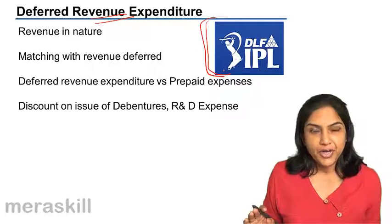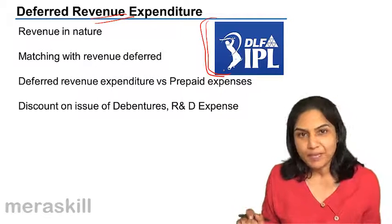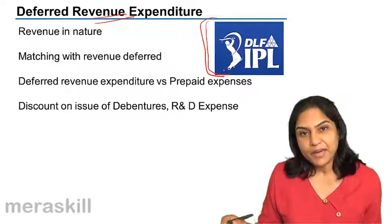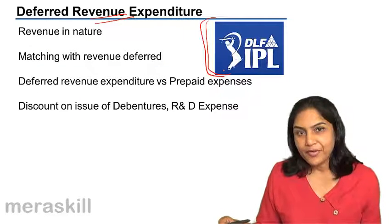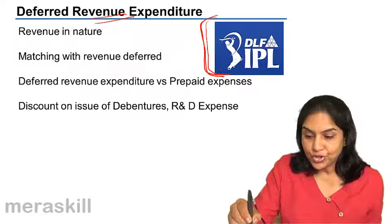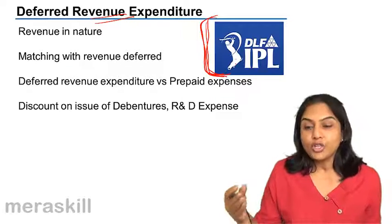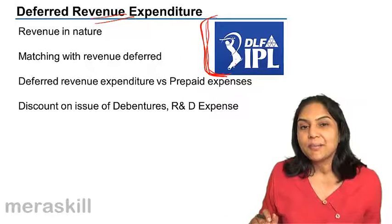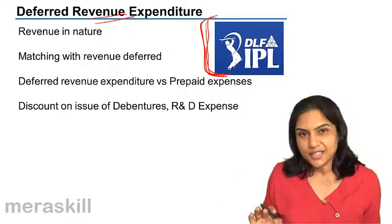Normally we take advertising to profit and loss — it is a recurring expense, something we spend on regularly. However, this particular expenditure is huge. It's a huge amount, and DLF expects to get benefit from this for the next five seasons.